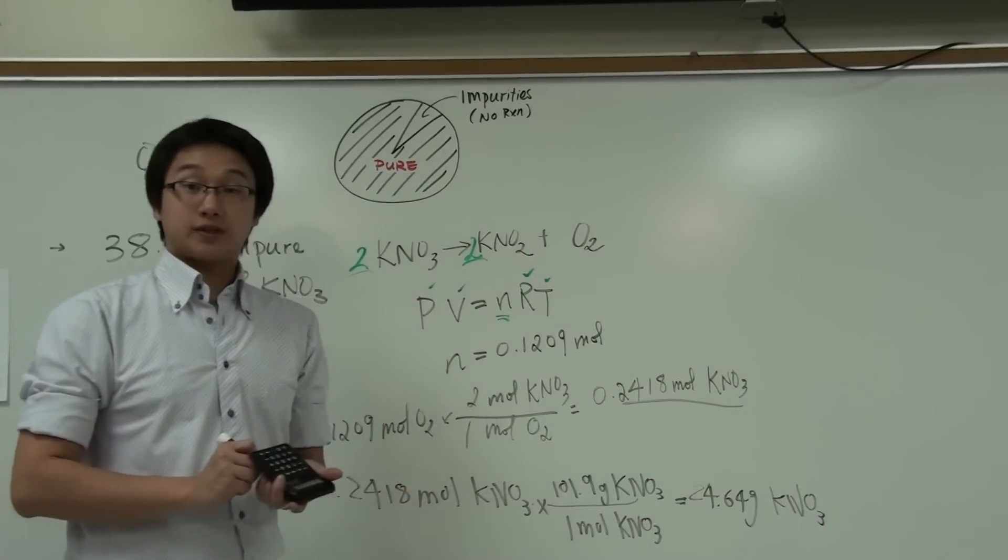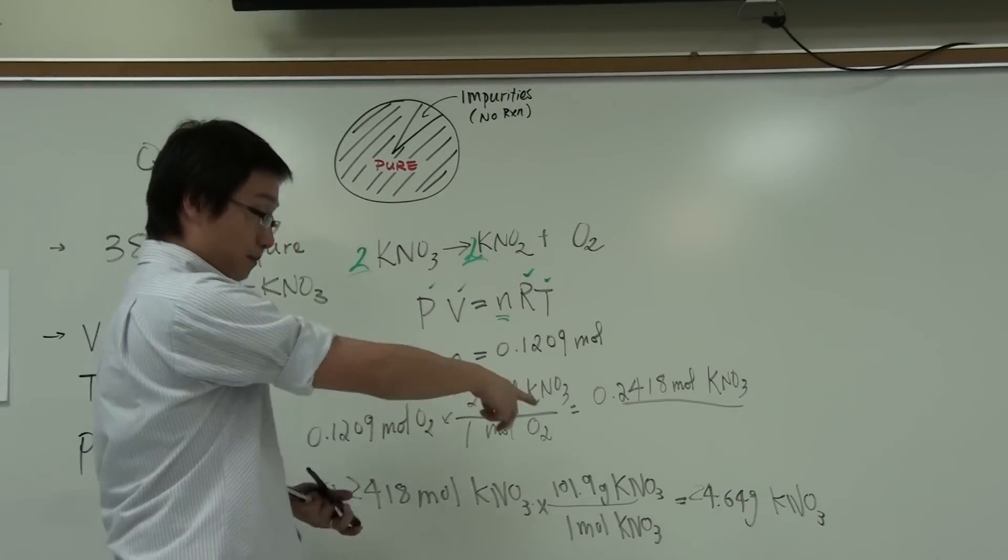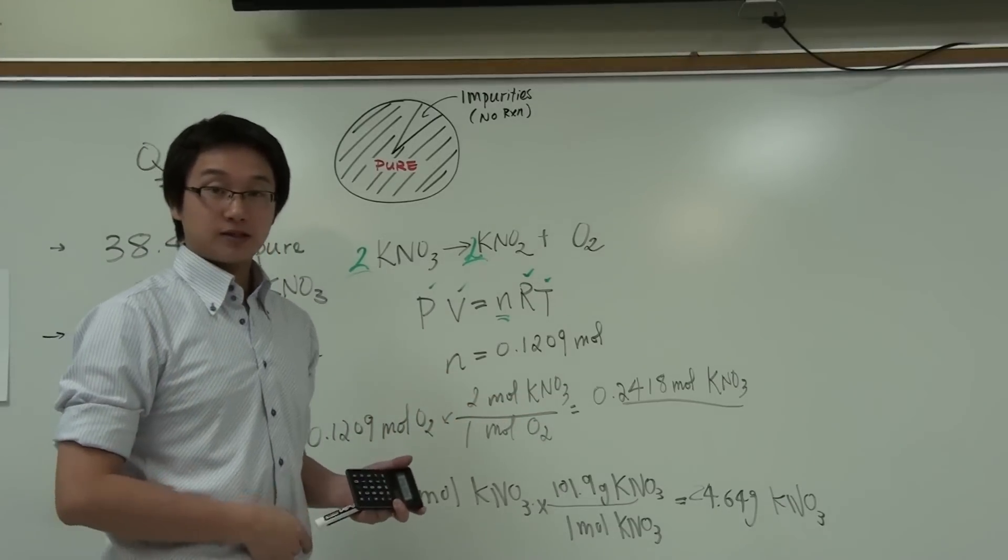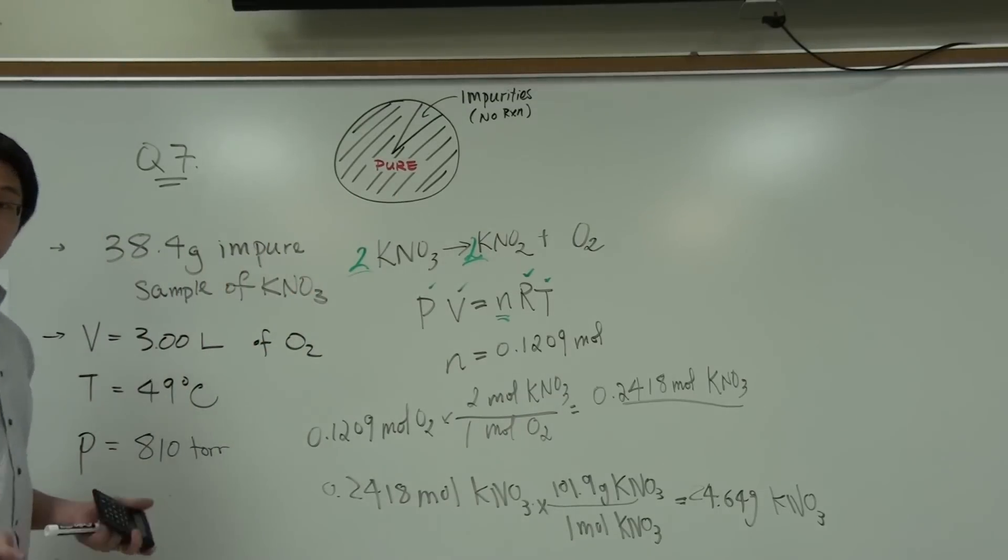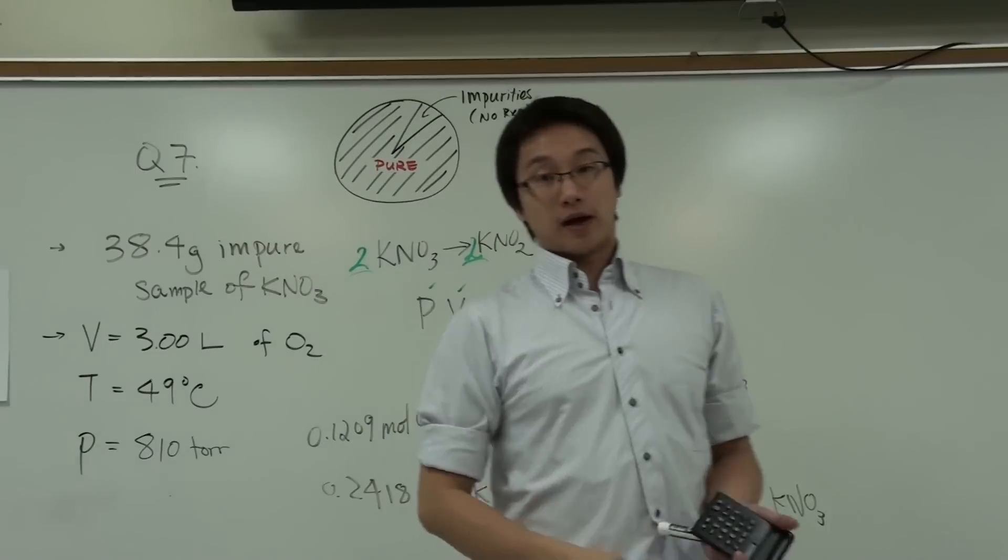To find out what the percentage is, you simply put that mass, which is the pure potassium nitrate, over this original sample mass. And you will get the percentage.